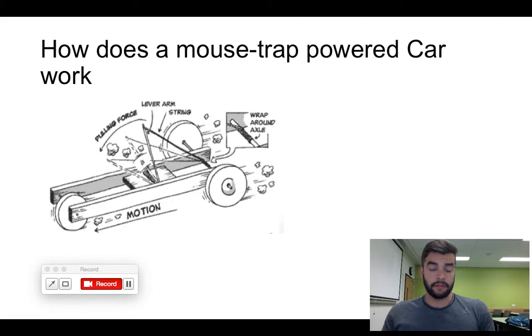So as you can see in this picture, the most important part of the movement of the car is that the string is tied to the lever arm and also on the other end is tied to the rear axle. And when the mousetrap is activated, the lever arm is going to go up and that's going to create a rotating movement on the rear axle, creating the motion for the car to move forward.